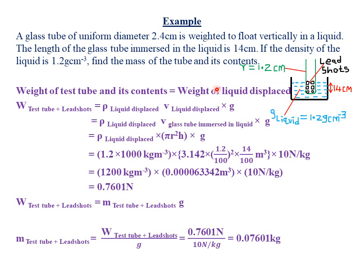From Archimedes' principle, when a body is partially or totally immersed in a fluid, it experiences an upthrust equal to the weight of the fluid displaced. So the upthrust equals the weight of the liquid displaced, given by ρVg — density of the liquid displaced times the volume of liquid displaced times gravity.